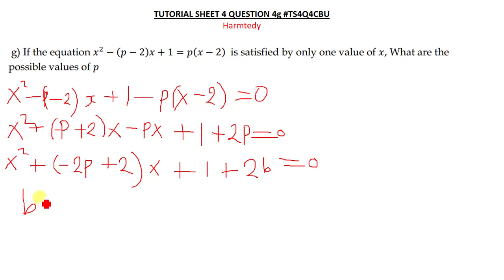So from there, we can now use our discriminant to get the value of p. So b squared will be, our b is this one, so meaning b squared will be negative 2p plus 2, and then in brackets,